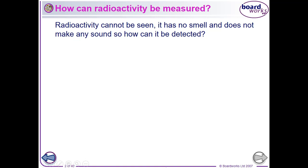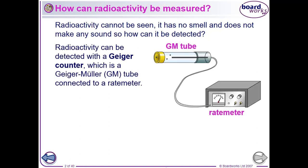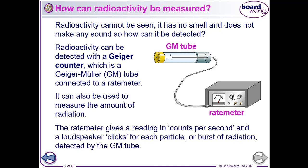We can't see radioactivity — it doesn't smell, it doesn't make any sound — so how do we detect it? Photographic film is one way. To get readings and numbers, the Geiger counter: a Geiger-Müller tube connected to a counter or rate meter will tell us how many detections and how many ionizations we're getting. A rate meter measures how many per second. Traditional ones give a measurement with a needle and a meter, and an audible click that gives you a really good feeling for how much you're detecting.